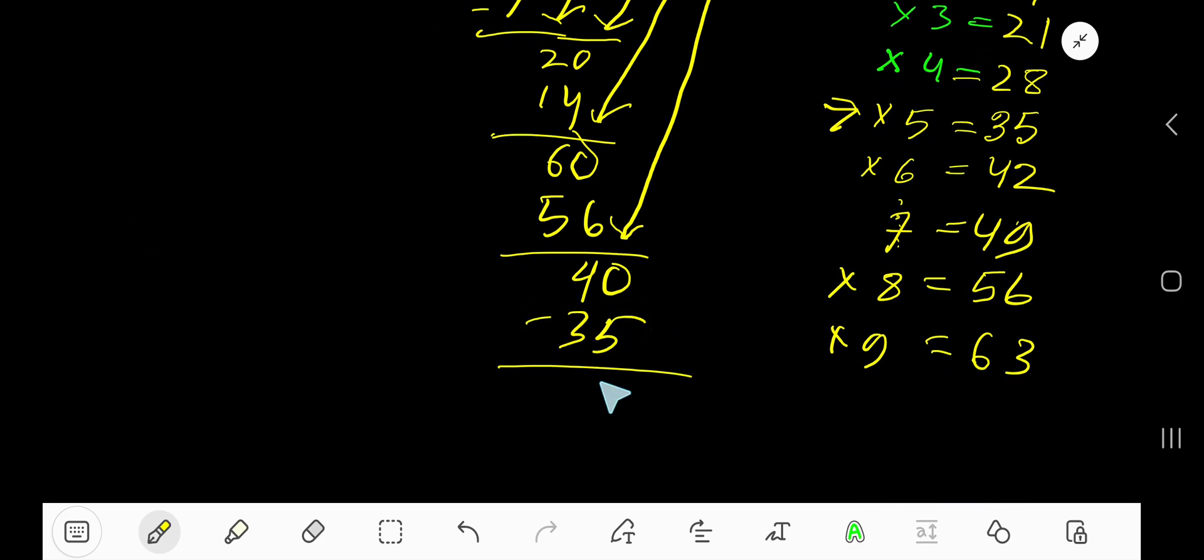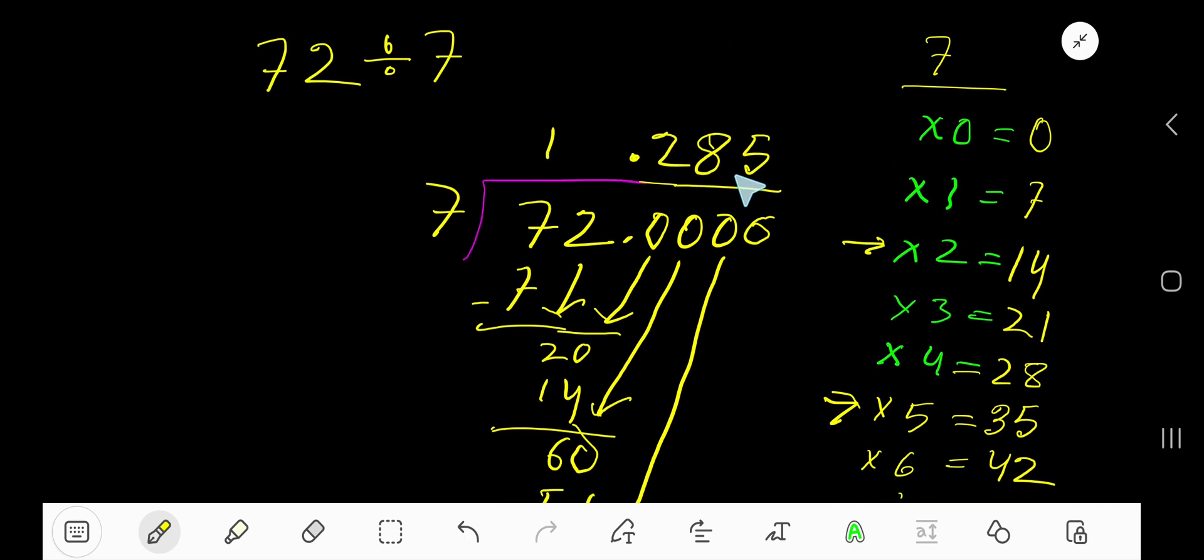Subtract to get 5. After the decimal we have 3 digits, so we can stop this process by putting 3 dots, which means it's continuing. So our answer is 1.285 dot dot dot.